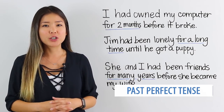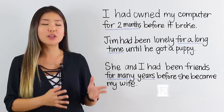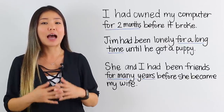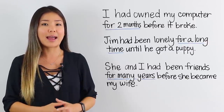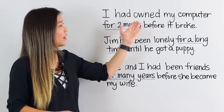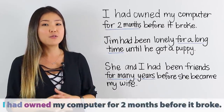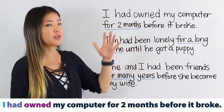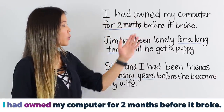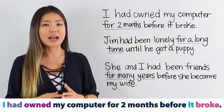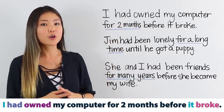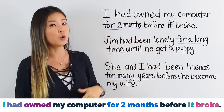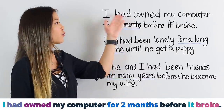Let's move on. Earlier, I mentioned that the past perfect tense can be used to describe an action that happened in the past before another action in the past. We can do the same thing, but also emphasize the duration — how long that first action happened. We do this by using 'for' and a duration. For example: 'I had owned my computer for two months before it broke.' This is very similar to the first usage: 'I had' and the past participle of the verb. This shows the action that happened earlier in the past, and the past simple verb 'it broke' shows the action that happened later. This sentence includes a duration: for two months.